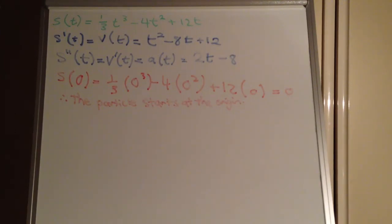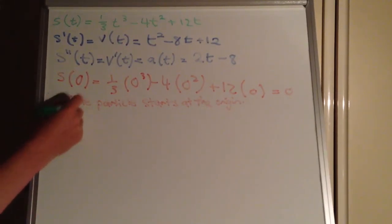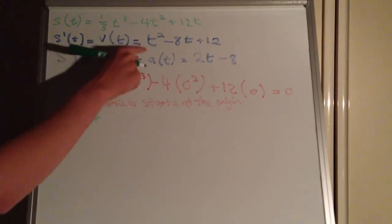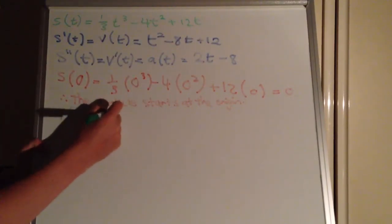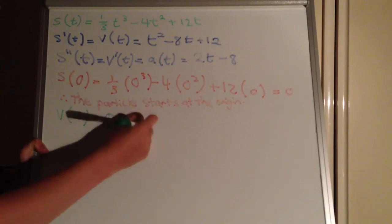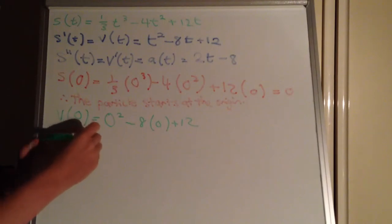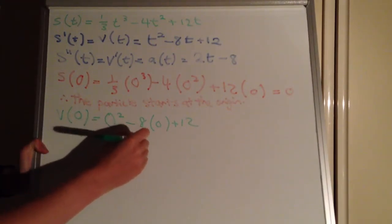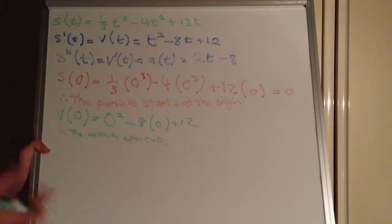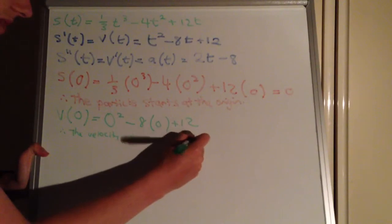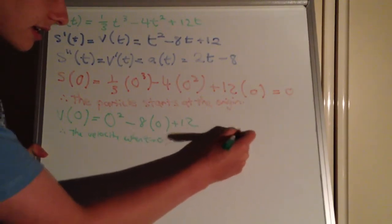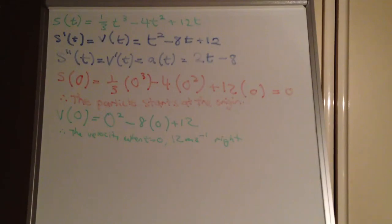Now we find v(0). We take our velocity function, substitute in t equals 0: 0 squared take 8 lots of 0 plus 12. Therefore, the velocity when t equals 0 is equal to 12 metres per second. We know it's moving to the right because it's a positive velocity. Positive direction is to the right, and negative direction is to the left.